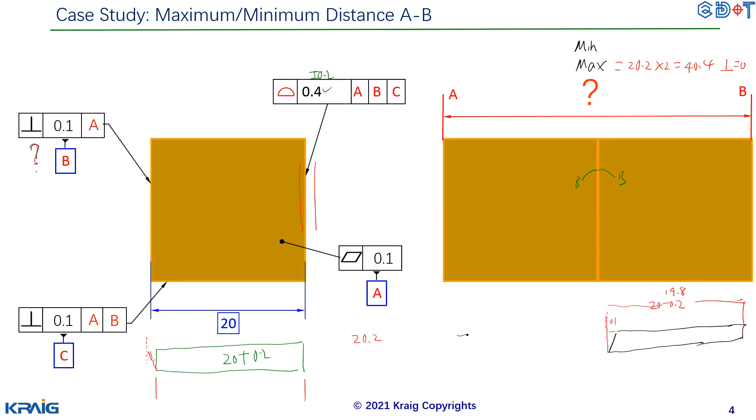And the next part will be like this. And here is a datum feature simulator. Because you should always use highest contact surface outside the material. And from here to here, you get 19.8. This is the minimum profile. And you can see there's a 0.1 overlap here.